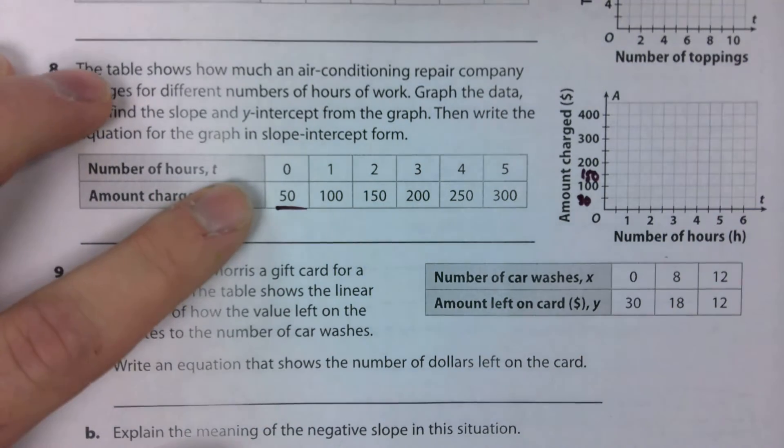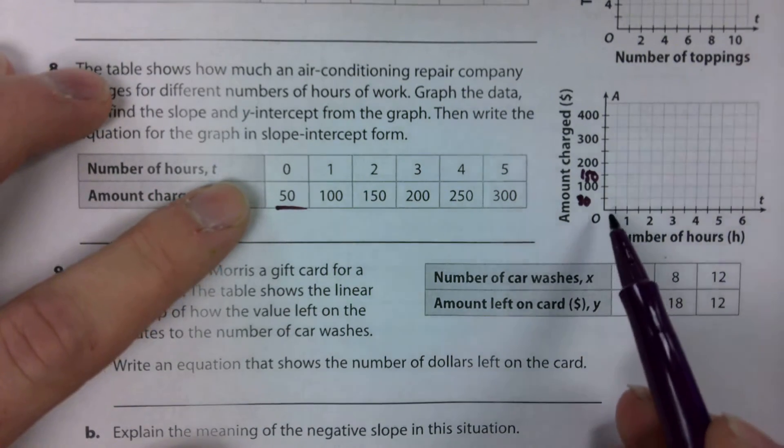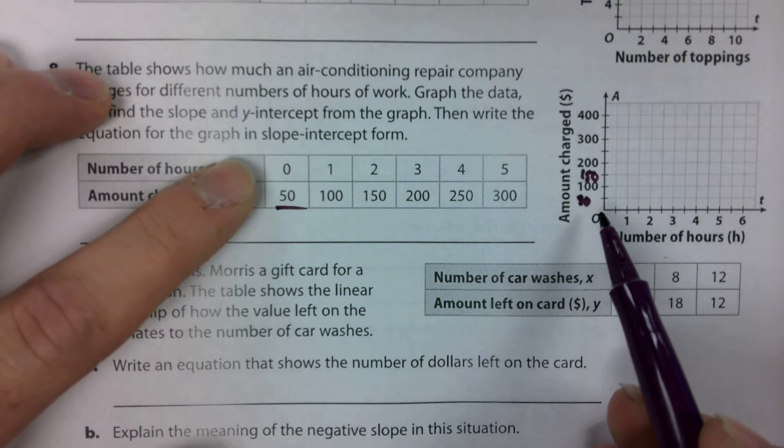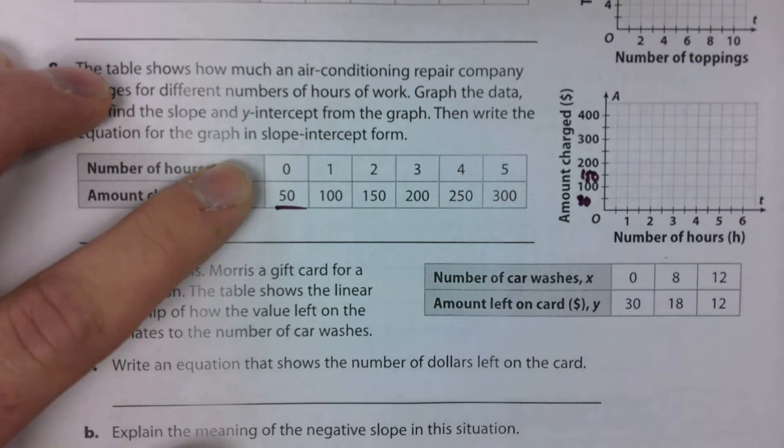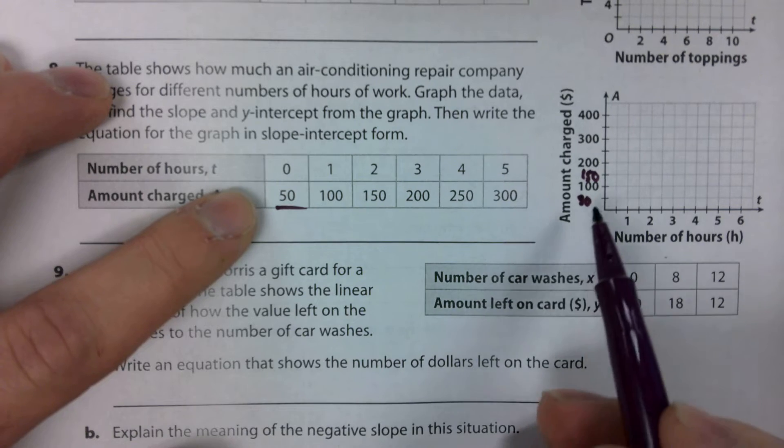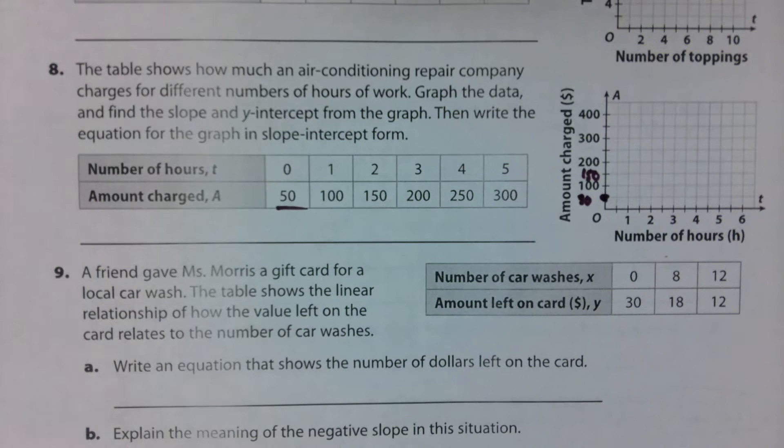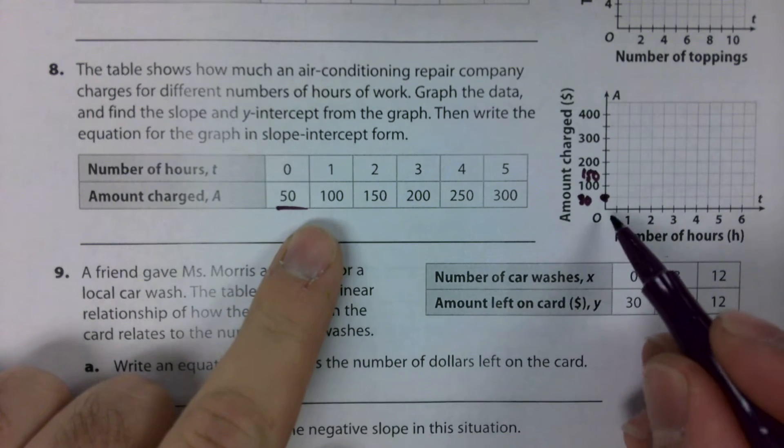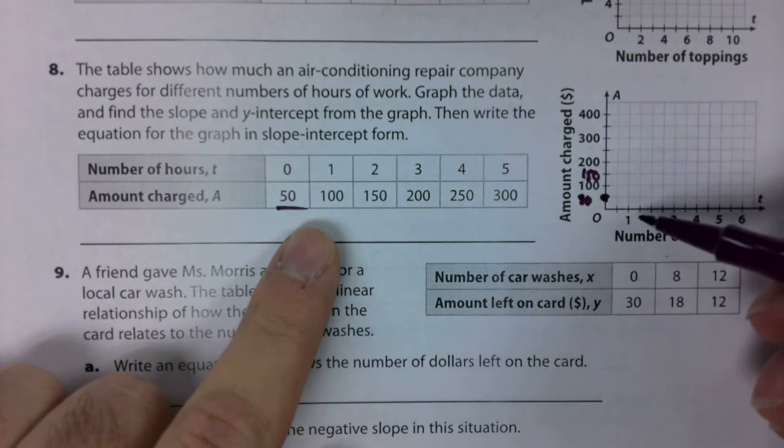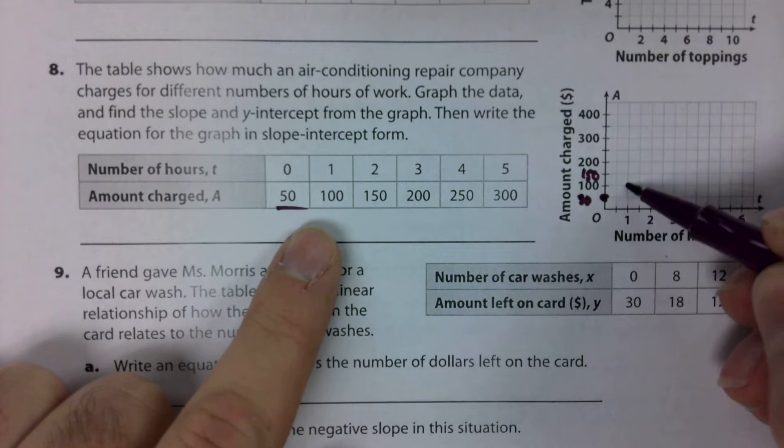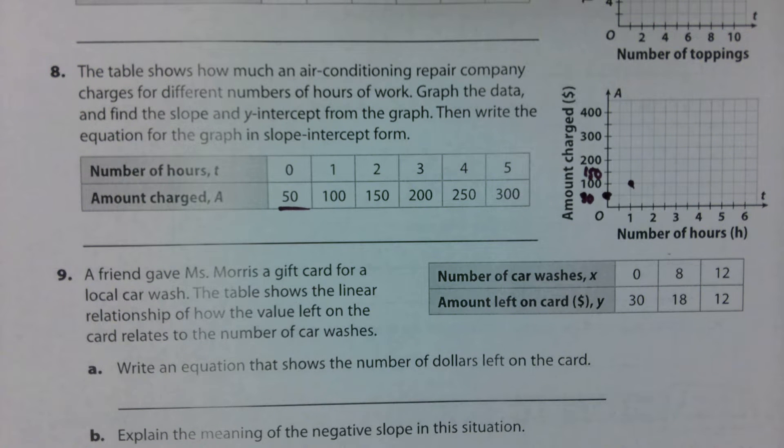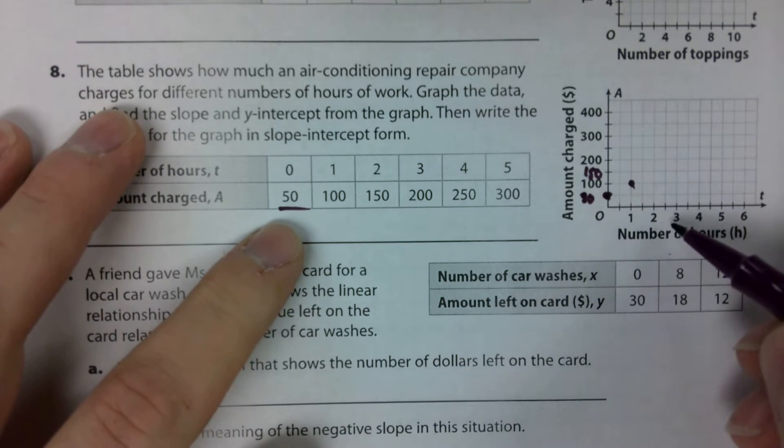We take our first point, 0, 50. We're going to start at the origin. 0 says we're going to go to the right 0 spaces, and 50 says we're going to go up 50 spaces, which is just one notch upward. Next point is 1, 100. We're going to go to the right until we hit 1, and then we're going to go up until we hit 100.